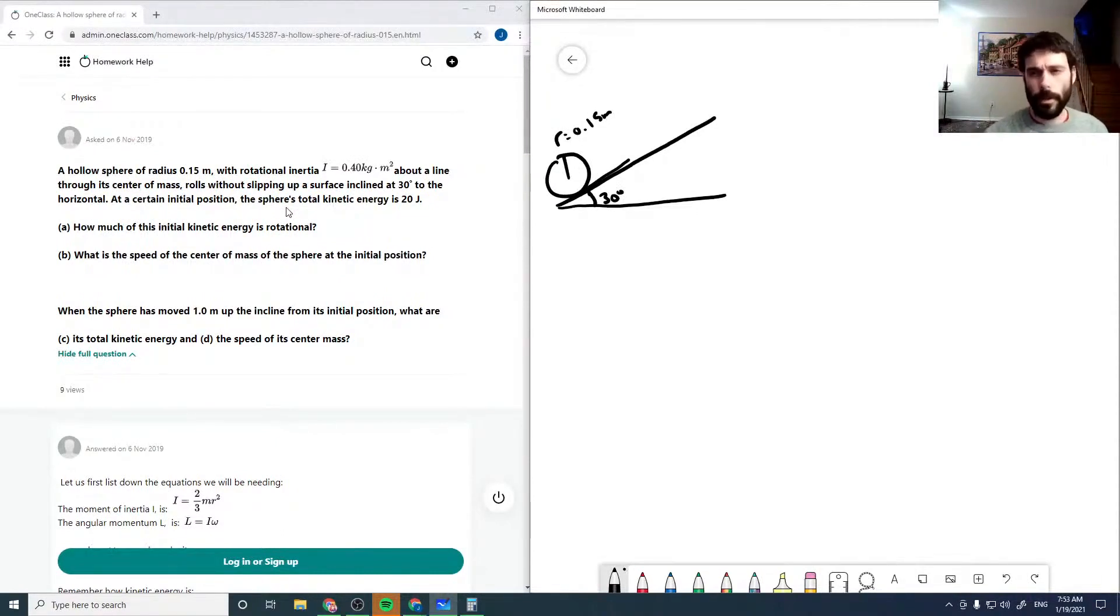The moment of inertia of the ball is 0.40 kilogram meters squared, but if I remember correctly, if you use this value it doesn't work, so instead I'm going to use 0.040 kilogram meters squared.